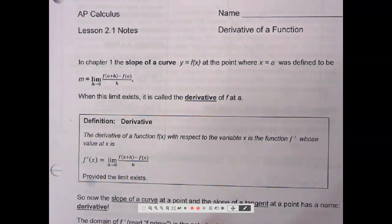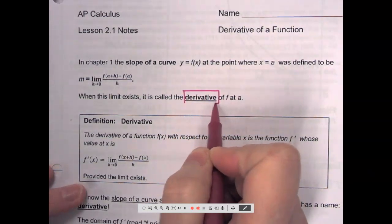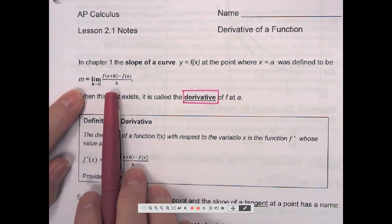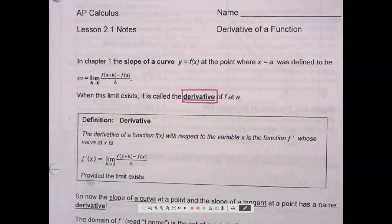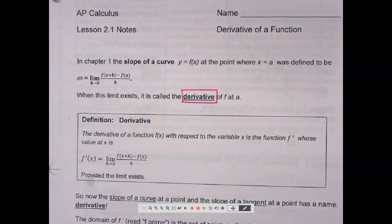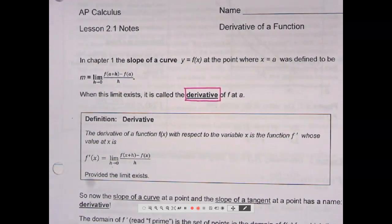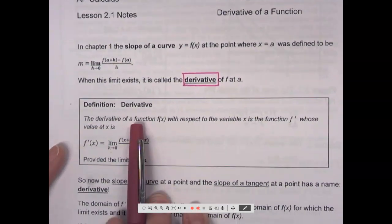I'll probably use this word more than any other word this whole semester: derivative. So if you do this big long process and you get a number, then that number is the derivative of the function at that point. So derivative also means what? What did we call it yesterday on the test?